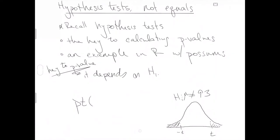We'll use the function PT with degrees of freedom equal to N minus 1. Now here's where it gets a little tricky: we could get either negative T or positive T from our test statistic calculation. It's easiest to take the absolute value of the test statistic — if the value is negative, taking the absolute value puts us in the right tail. If we calculate a positive value, taking the absolute value has no effect.